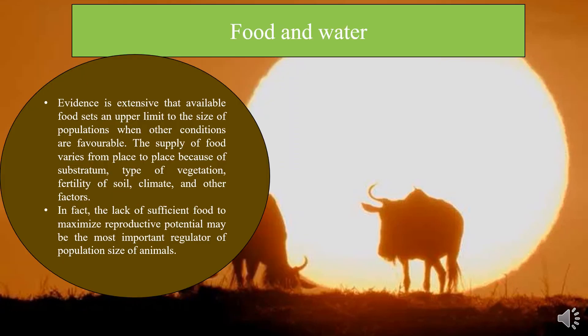The next factor is food and water. Evidence is extensive that the available food sets an upper limit to the size of populations when other conditions are favorable. This principle was known to Thomas R. Malthus back in 1798 and influenced Charles Darwin in his development of the theory of evolution.